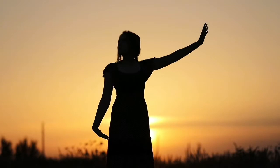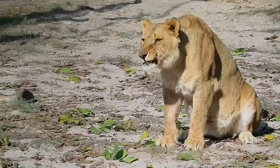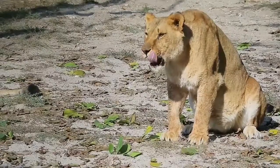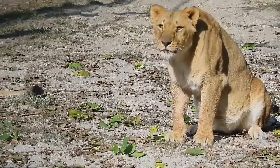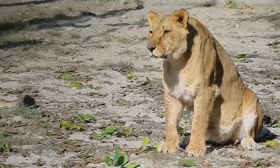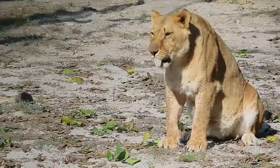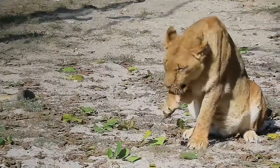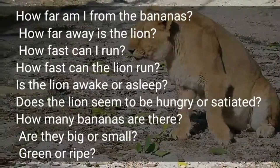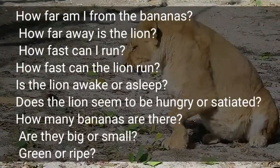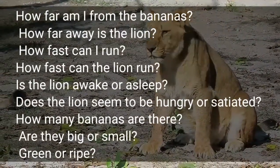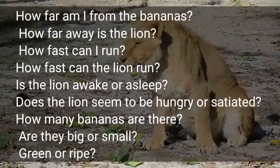Consider, for example, the following survival problem. A baboon spots some bananas hanging on a tree but also notices a lion lurking nearby. Should the baboon risk his life for those bananas? This boils down to a mathematical problem of calculating probabilities — the probability that the baboon will die of hunger if he does not eat the bananas, versus the probability that the lion will catch him. To solve this, the baboon needs to consider: How far am I from the bananas? How far away is the lion? How fast can I run? How fast can the lion run? Is the lion awake or asleep? Does the lion seem hungry or satisfied? How many bananas are there? Are they big or small? Green or ripe?